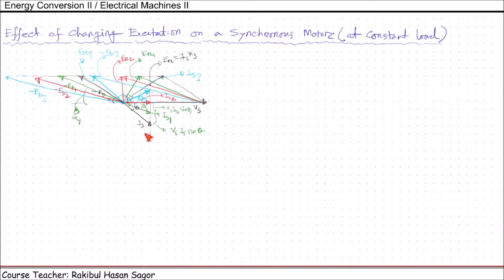Let us continue the lecture from the previous topic. In our previous lecture, we saw that if a synchronous motor is running under lagging power factor condition, if the excitation of the motor is increased, then the power factor of the motor starts increasing and it goes to the unity value. Again, it starts decreasing with leading power factor.